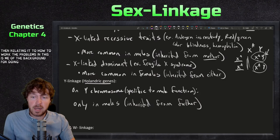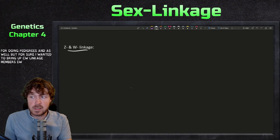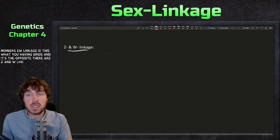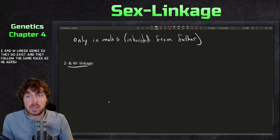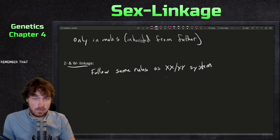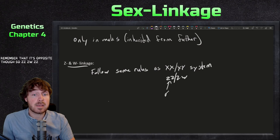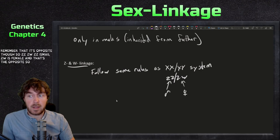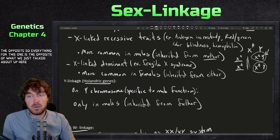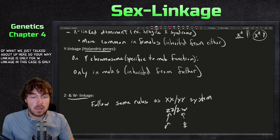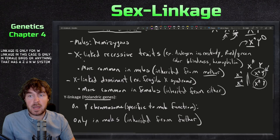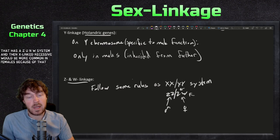Finally, ZW linkage — found in birds — is the opposite of the XY system. There are Z and W linked genes. In this system, ZZ is male and ZW is female, which is the opposite of the XY system. So everything works in reverse: W linkage is only in female birds, and Z-linked recessive traits would be more common in females due to the hemizygous form.